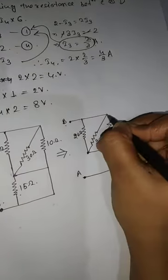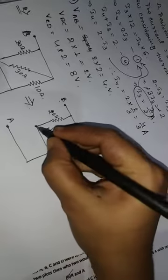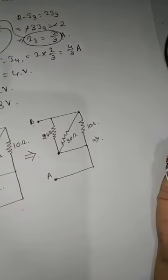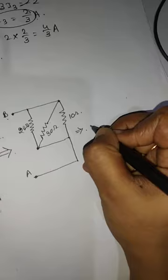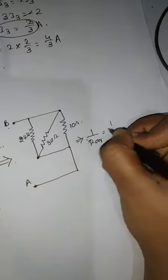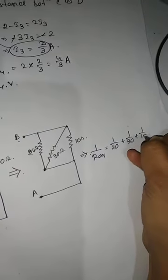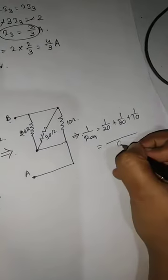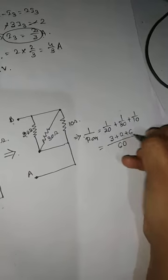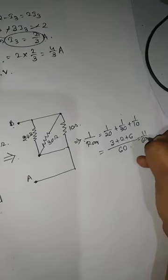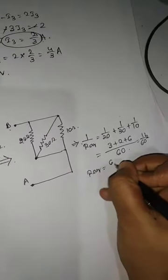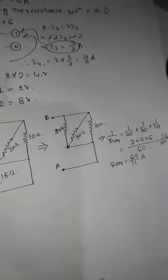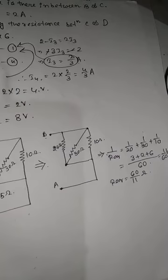So for the equivalent resistance: 1 by R equivalent equals 1 by 20 plus 1 by 30 plus 1 by 10. The LCM is 60, giving 11 by 60 ohm. Therefore the equivalent resistance is 60 by 11 ohm.